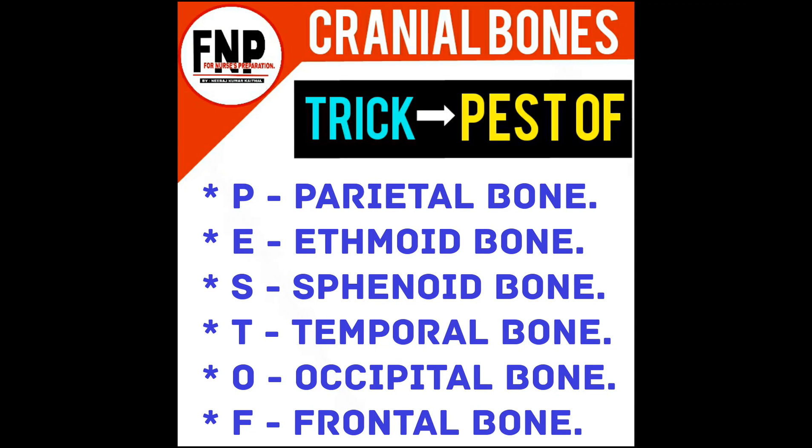Our brain lies in Cranium. Cranium protects our brain. Cranium is made up of Cranial Bones. There are 6 types of Cranial Bones, totaling 18 in number.